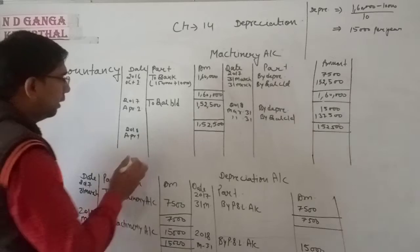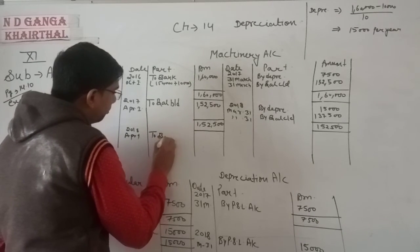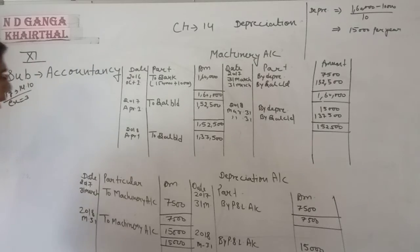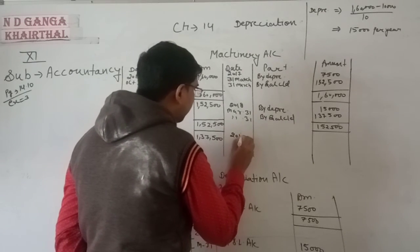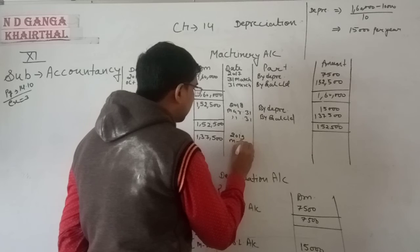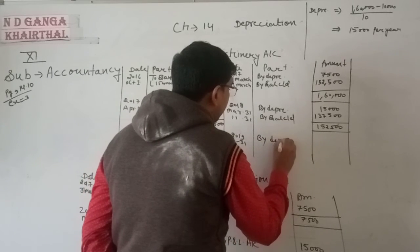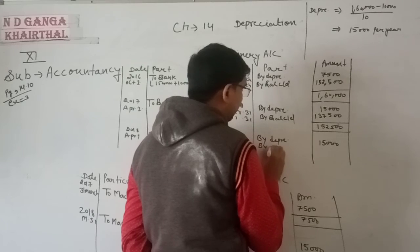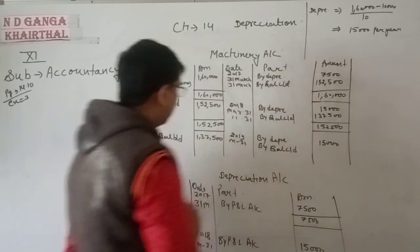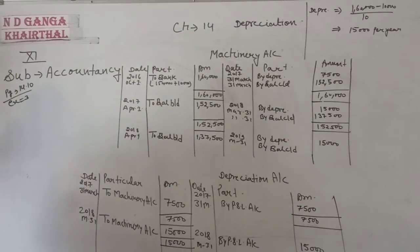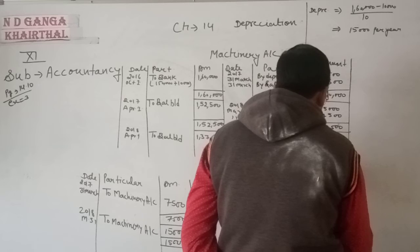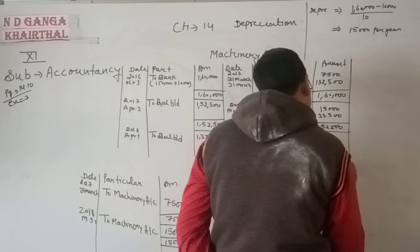In the machinery account for the third year, balance brought down is 1,37,500 rupees. At the end of the financial year, depreciation of 15,000 rupees is charged again. On 31st March 2019, by depreciation 15,000 rupees, and by balance carried down 1,22,500 rupees — that is 1,37,500 minus 15,000.